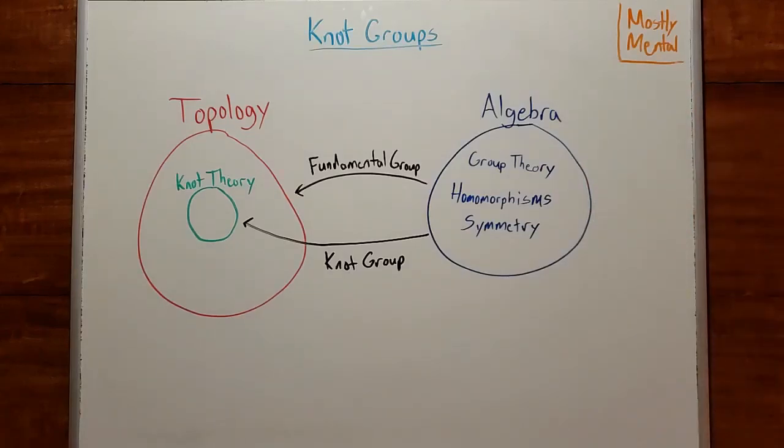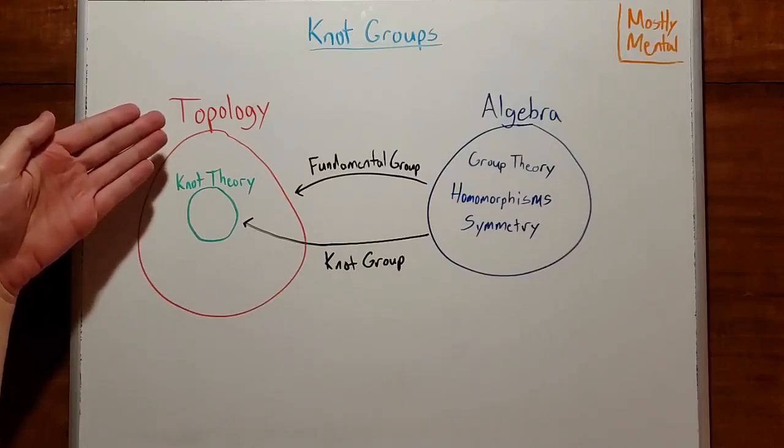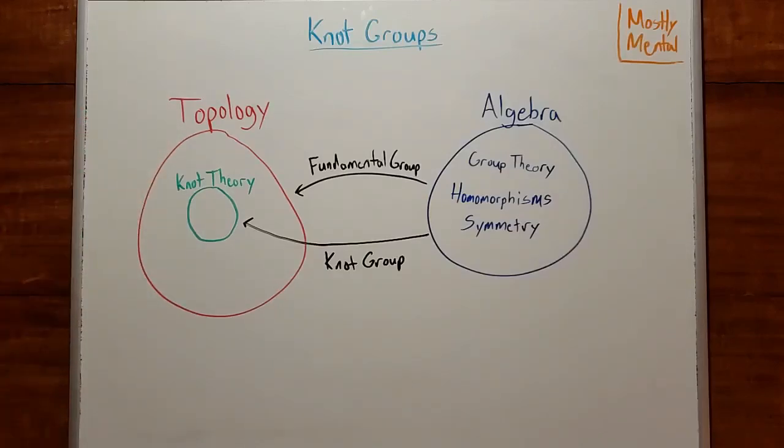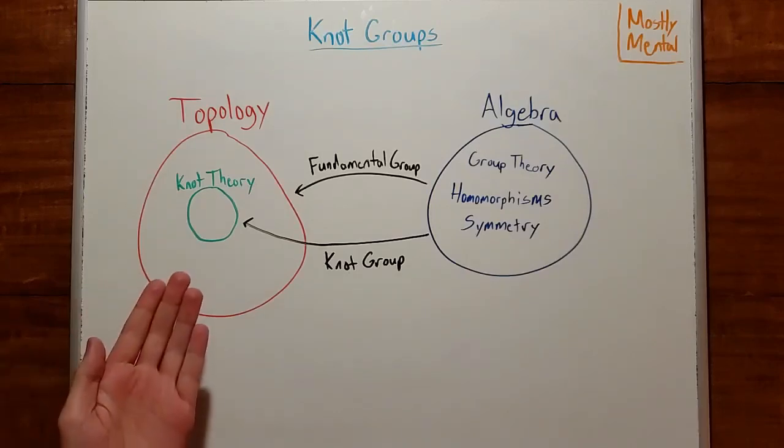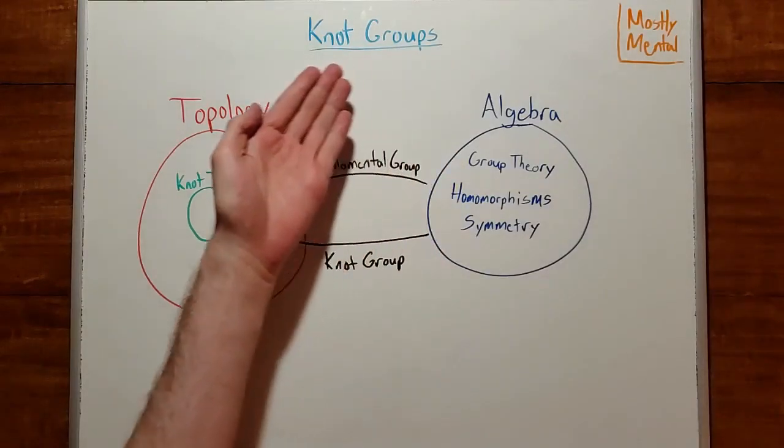We're now a few videos into a series on knot theory. And as a mathematical discipline, knot theory falls under the broader umbrella of topology, that is, stretchy geometry. But many of the most powerful tools in a mathematician's toolkit aren't topological, they're algebraic. Fortunately, topologists have found a way to make use of those tools anyway. So today I'd like to bring the full force of algebra to bear on knot theory, using what are known as fundamental groups and knot groups.